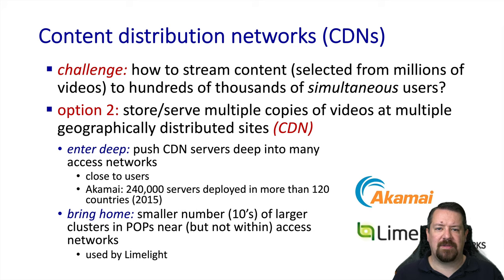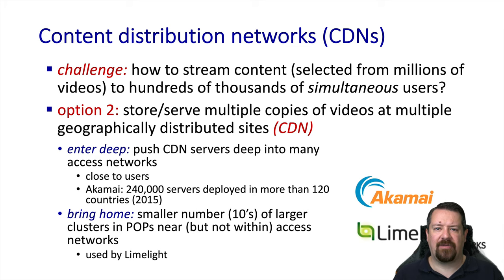The CDN servers themselves get distributed to be close to the clients that might connect to them. For example, with Netflix, if you are on a major ISP, you're probably connecting to a server within your ISP that has a copy of the content you want to stream. As we can see with the Akamai example, this results in hundreds of thousands of servers distributed all over the internet. For a smaller CDN, they may not have the resources to put so many servers directly in access networks, but might put them in a smaller number of data centers located close to access networks.